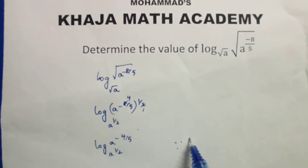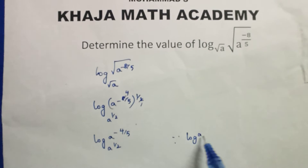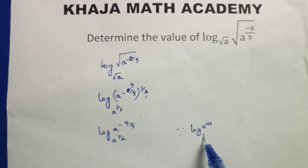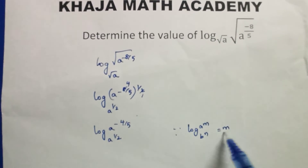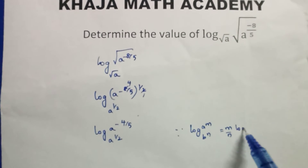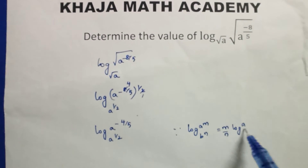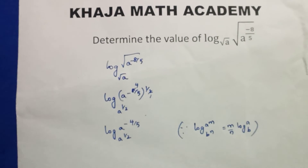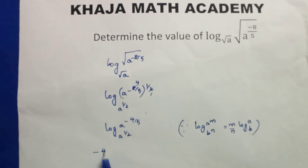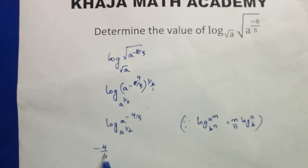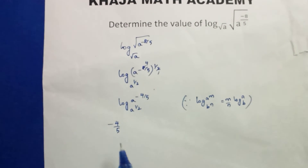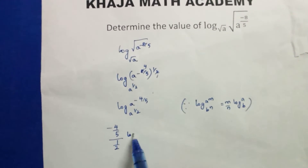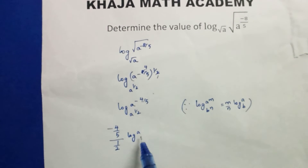There is a formula: log of a power m to the base b power n equals m by n times log a to the base b. Using this formula, we get minus 4 by 5 divided by 1 by 2, times log a to the base a.